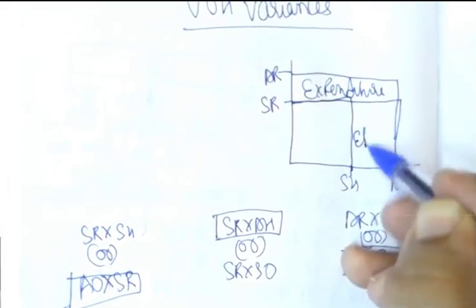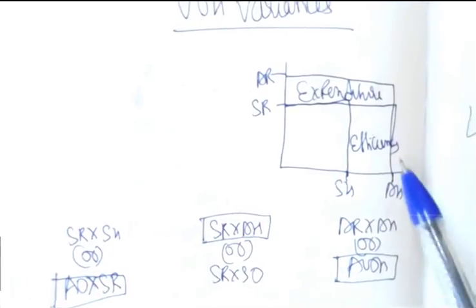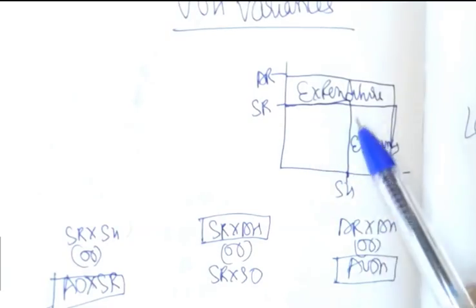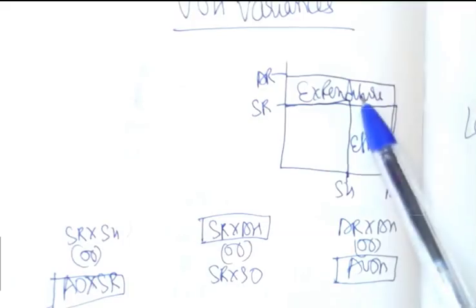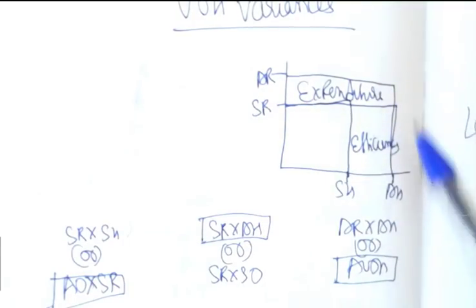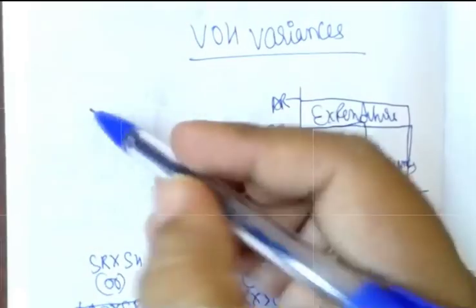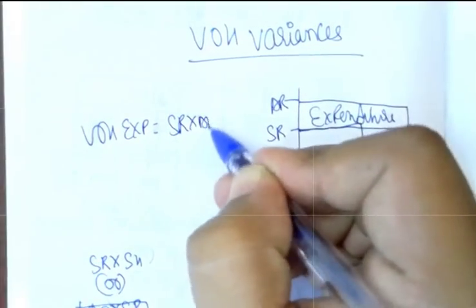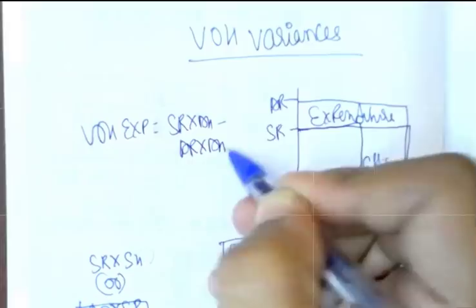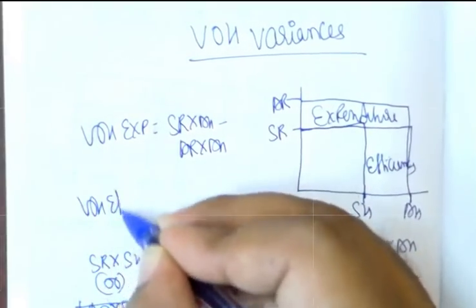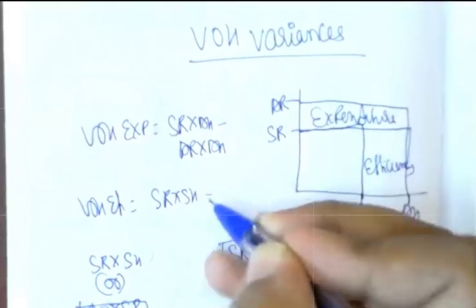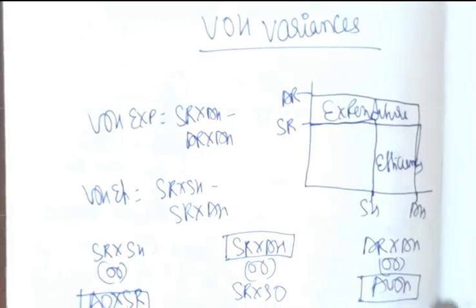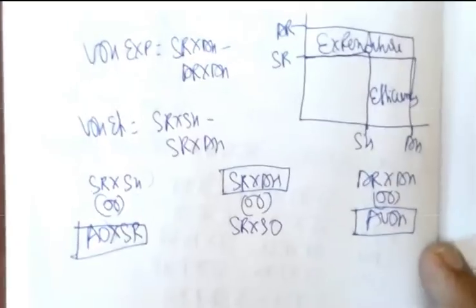This top part is called expenditure variance, like rate, and this part is called efficiency variance. The formula for variable overhead efficiency variance is SR × SH minus SR × AH. Expenditure is SR × AH minus AR × AH. So VOH expenditure is SR × AH; VOH efficiency is SR × SH minus SR × AH. This is what you will be using.